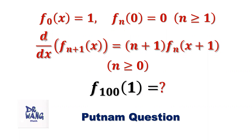The derivative of fn+1 of x equals (n+1) times fn of x plus 1, for n is bigger than or equal to 0. What is the value of f100 of 1?